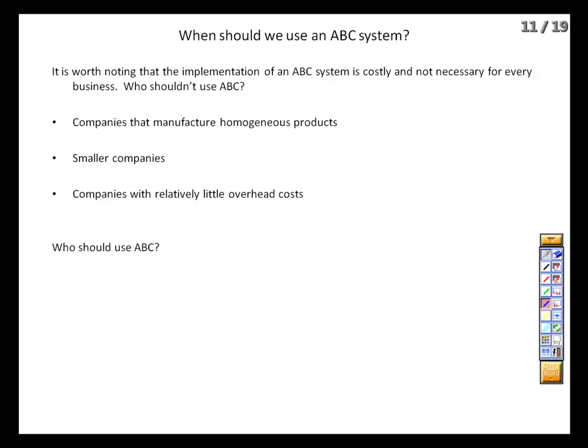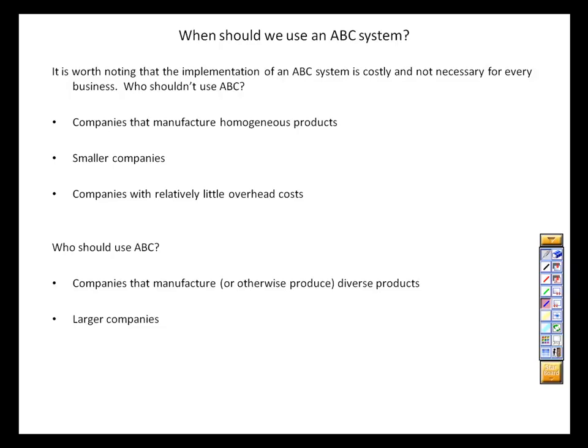Conversely, what sorts of companies could make use of ABC? Well, companies with diverse products that require different sorts of overhead activities. Say we're Kraft and we make cheese products, Oreos, and Crystal Light. Dairy requires refrigeration in a way that Oreos don't, and Oreos require baking in a way that Crystal Light doesn't. So it may make sense for that sort of company to fine-tune its overhead allocation. Larger companies can better absorb the cost and are more likely to have bloated operations generating waste that can be trimmed. And companies with lots of overhead costs.